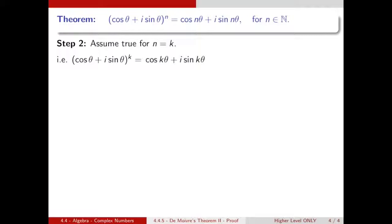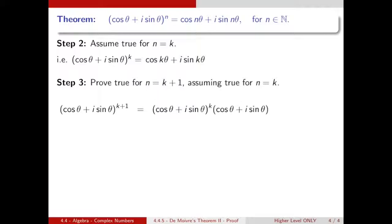And step three, we want to prove this is true now for n equals k plus one, assuming true for n equals k. So our left hand side becomes cos theta plus i sine theta to the power of k plus one. And we somehow want to create a cos theta plus i sine theta to the power of k from this to use our assumption. So we can rewrite that as a product of cos theta plus i sine theta to the power of k times cos theta plus i sine theta.